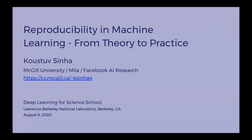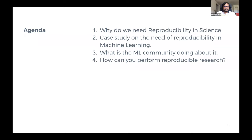Welcome to the talk. Basically in this talk, I will go over four different agendas. First I will talk about why we need reproducibility in science, especially in machine learning. Then I want to talk about a case study illustrating the need for reproducibility, going over certain findings that came up in the literature recently. Then I will talk about what the machine learning community is doing about it, and finally how you can perform reproducible research.